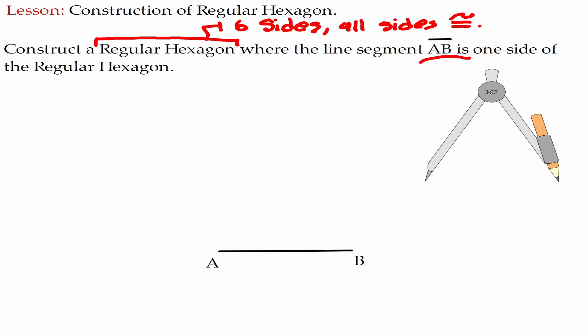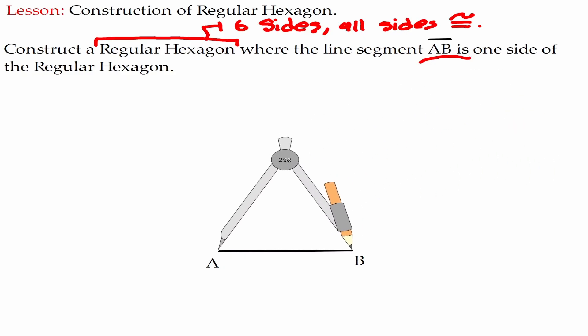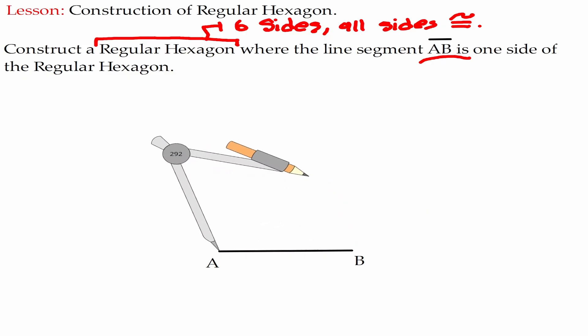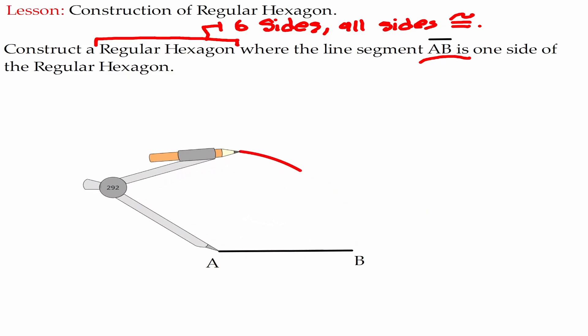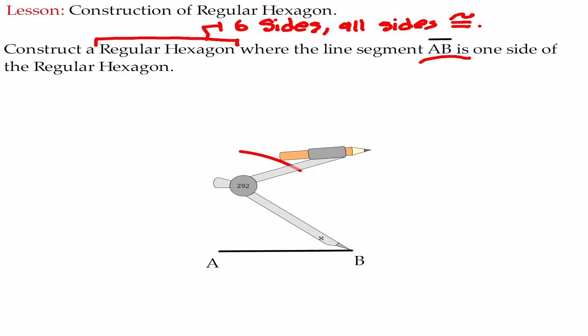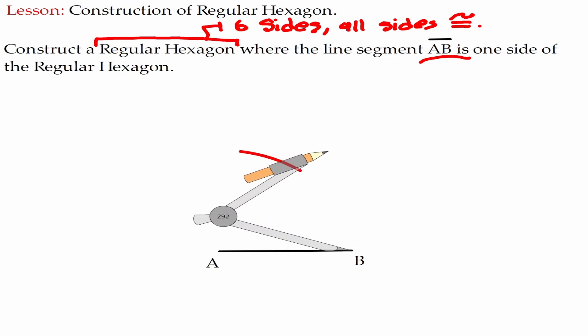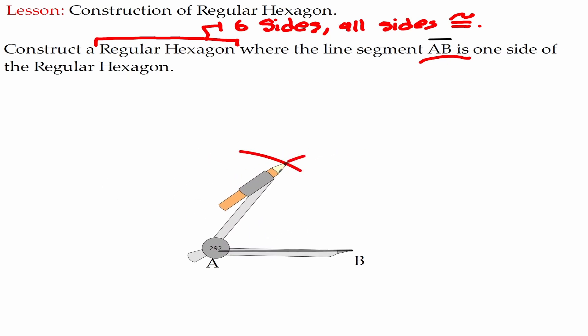The way that we're going to go about it is we're going to get our compass, and I'm going to start by measuring the length from A to B. Now that I have that length, I'm going to create a mark on the top, and I'm going to move my metal leg to B and create the same mark there.